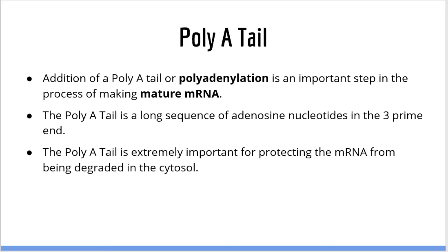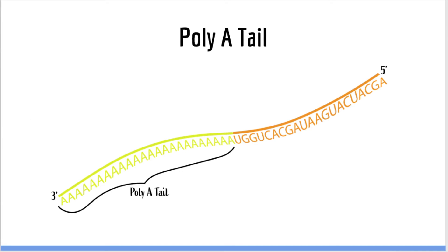Next, let's talk about the addition of the poly-A tail, or polyadenylation. This is an extremely important step, as lack of a poly-A tail will result in mRNA that is degraded before translation can occur. The poly-A tail is a simple, long sequence of repeating adenosine nucleotides located at the 3' end of the mRNA molecule. The poly-A tail is not coded in the DNA strand but rather added by special proteins after termination has occurred. When the mRNA leaves the nucleus, the 3' end is progressively shortened, and once the poly-A tail has been completely removed, the mRNA will be destroyed. Special non-coding RNAs called microRNAs can destroy mRNA by speeding up the process of poly-A tail degradation.